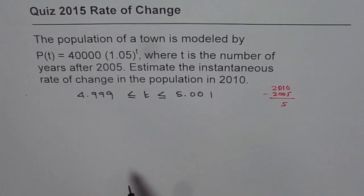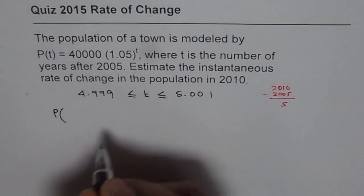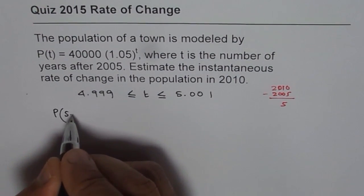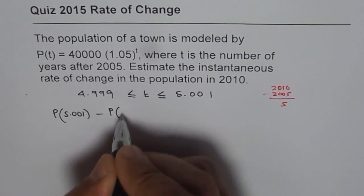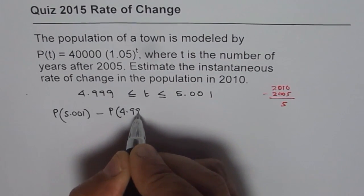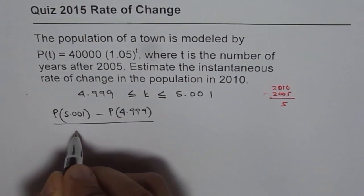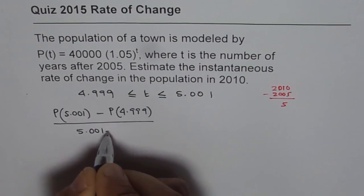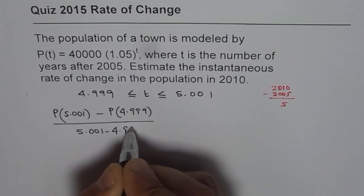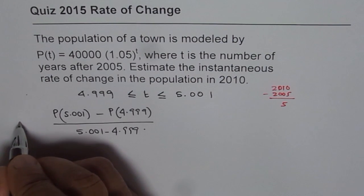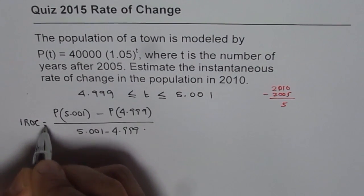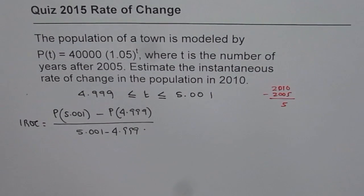So once we have this, you can use the formula, that is, P(5.001) take away P(4.999) divided by 5.001 minus 4.999. That gives you the instantaneous rate of change at 5.